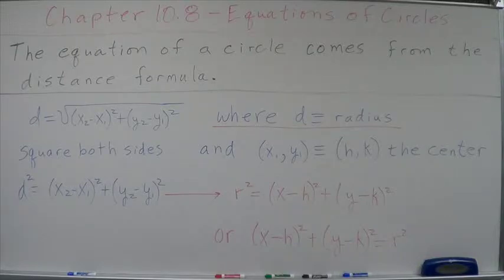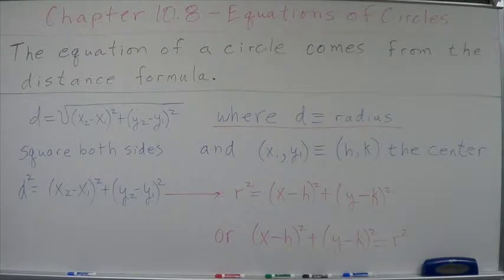What we're looking at is the equation of a circle comes from the distance formula. Why? Because, what is the definition of a circle? The definition of a circle is that it is a collection, or the locus, of all points the same distance from a given point. The given point being the center.